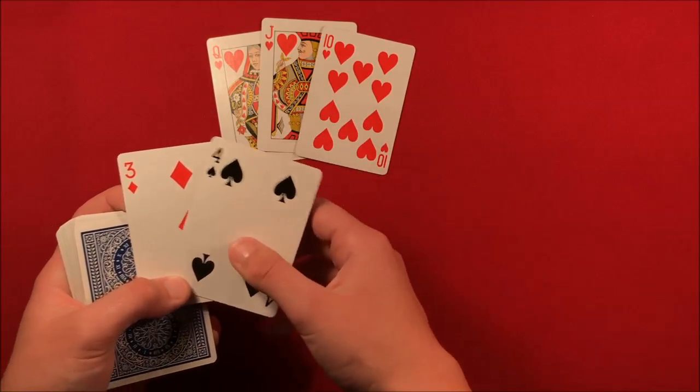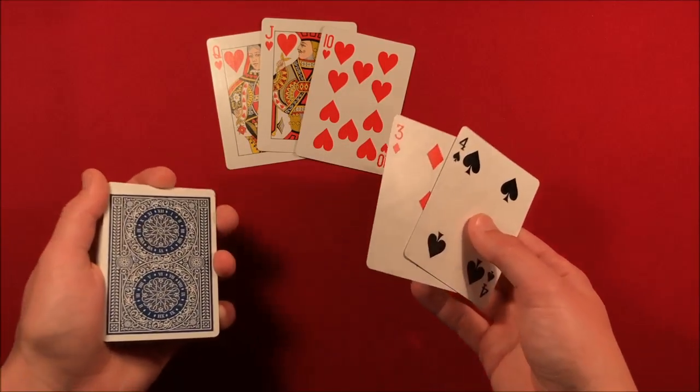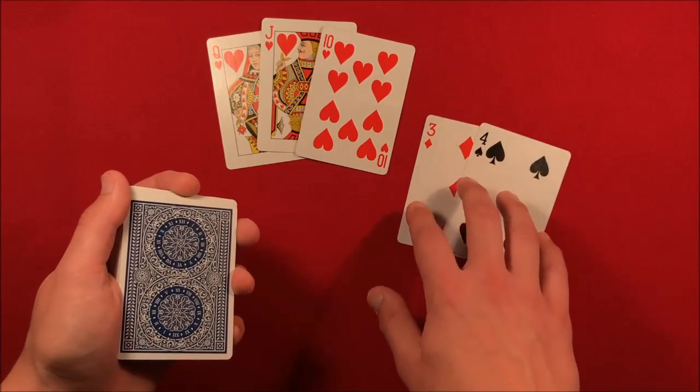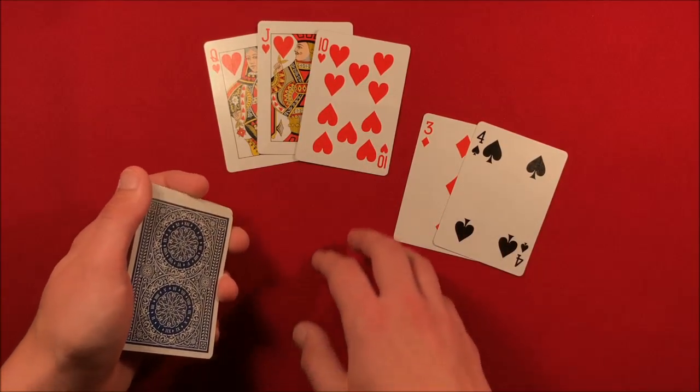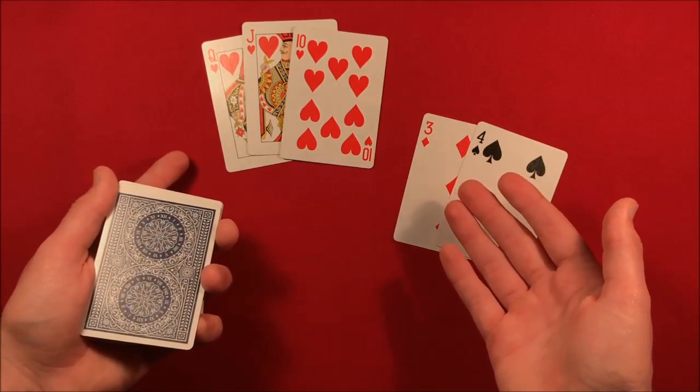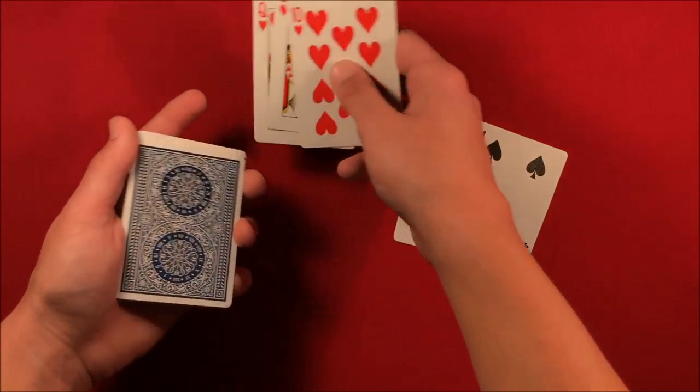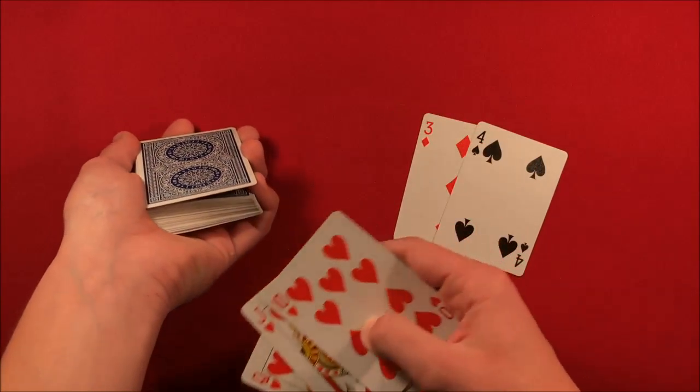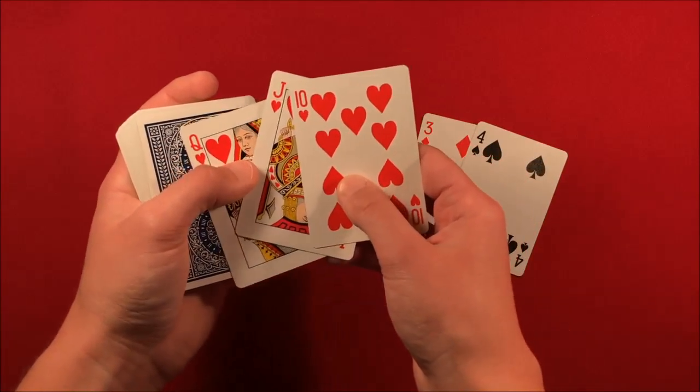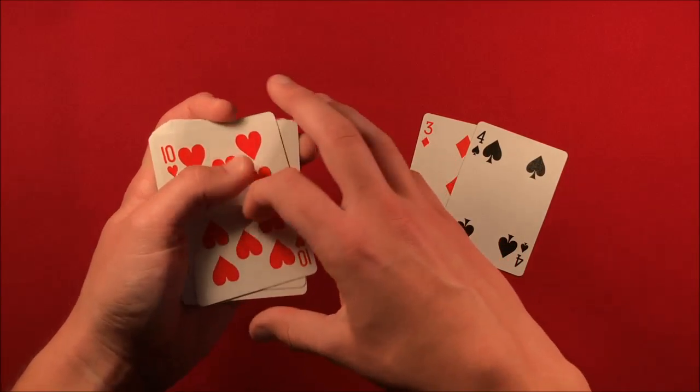You can tell the spectators that you wished you could have changed these cards into the ace and the king of hearts. So what you do is as you're telling them that story about wanting to change these cards, you casually just flip these cards up. You still have the break here, you casually pick these cards up, put them face up.